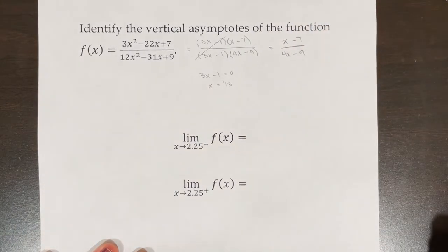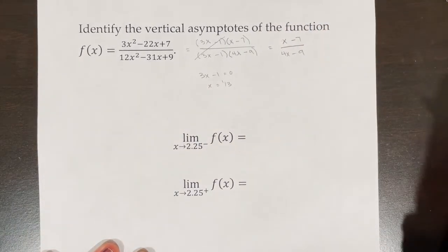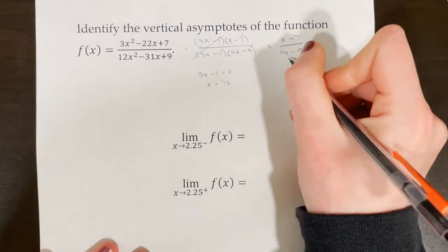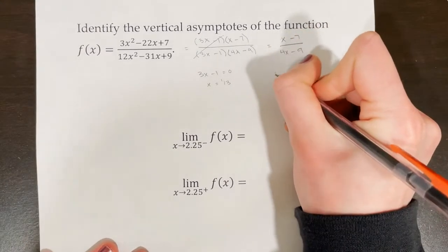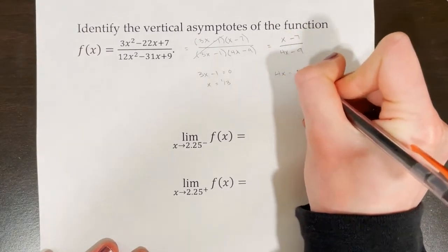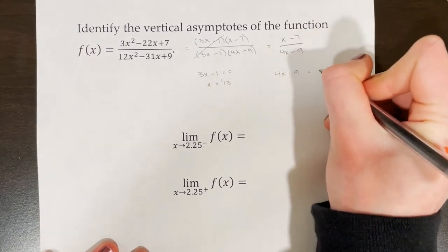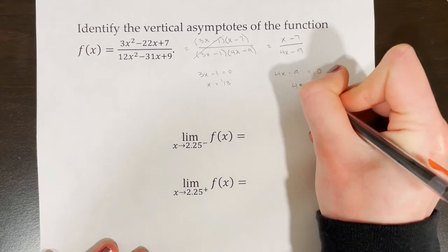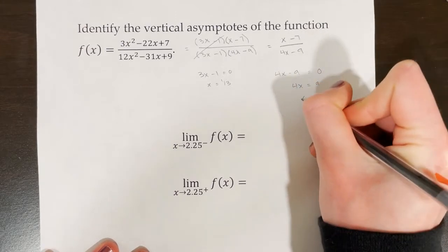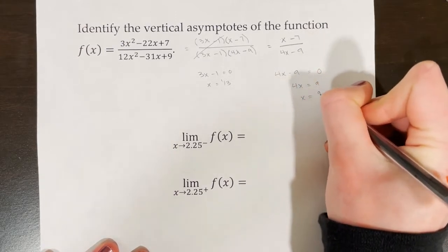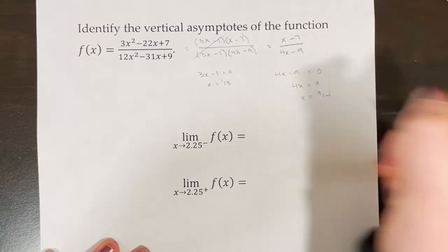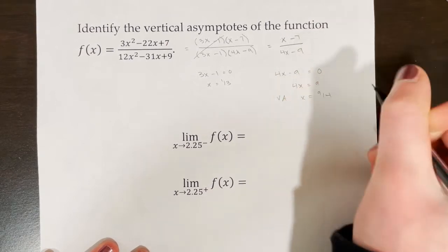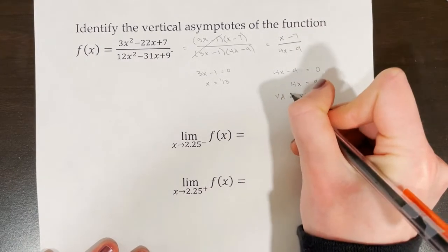Recalling from pre-calculus, the way we find a vertical asymptote is to take the denominator 4x − 9 and set it equal to 0. So 4x = 9, meaning x = 9/4. We have a vertical asymptote at x = 9/4.